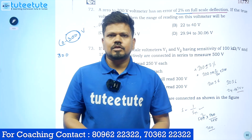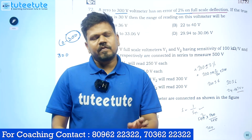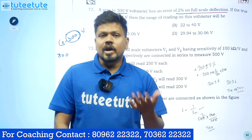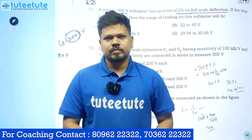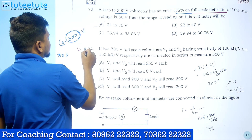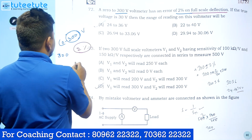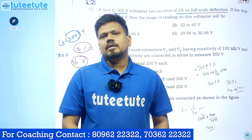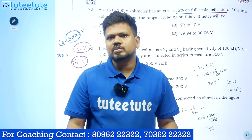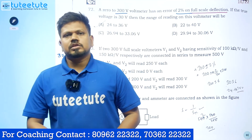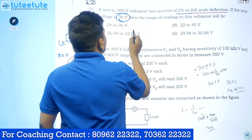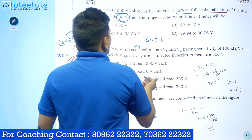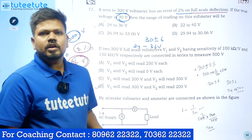Whatever reading this voltmeter is measuring, whether one volt, two volt, or any volt, the error you will get is 2 percent on the full scale. So calculate 2 percent of 300: that is 6 volts. Plus or minus 6 volts will be the guaranteed error. Now it is measuring 30 volts, so it will measure 30 plus or minus 6, meaning it will measure from 24 volts to 36 volts.